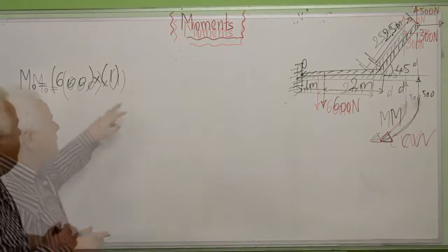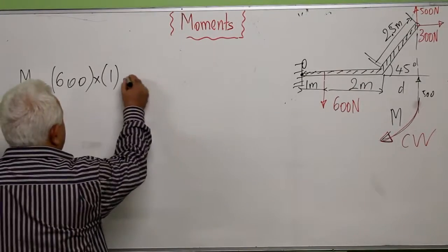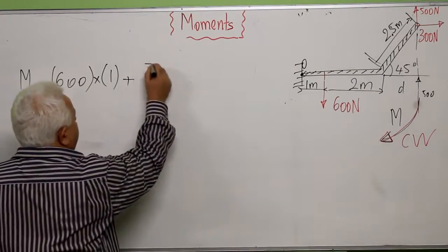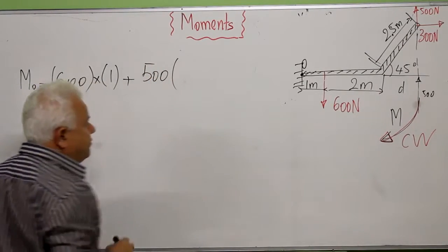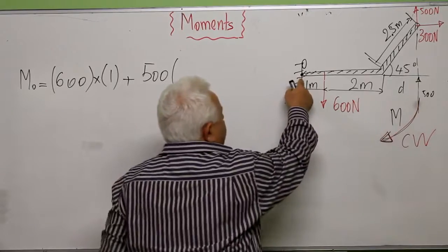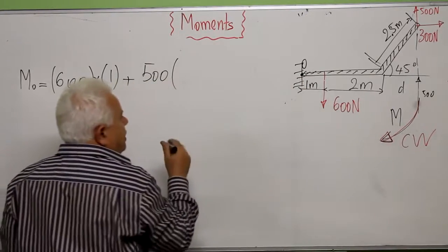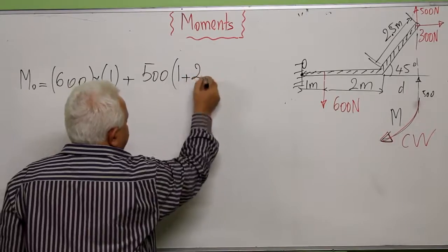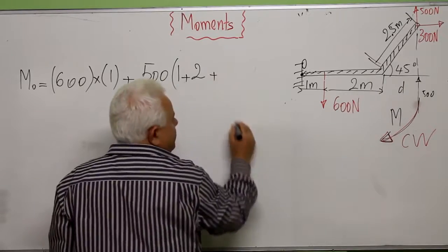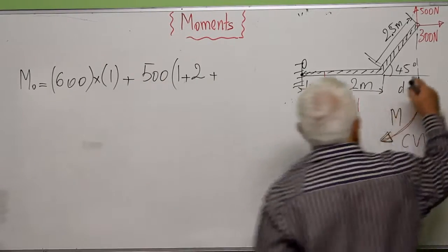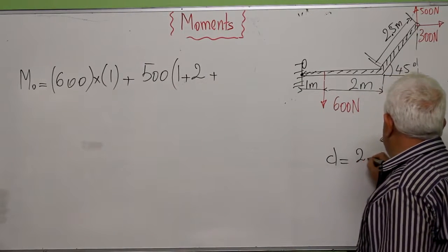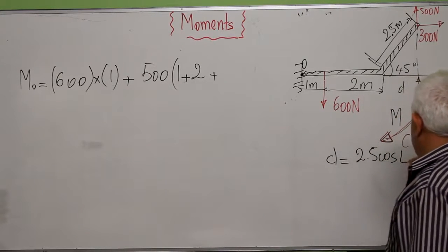So I have to take this into consideration for my calculation. Now we have to add the moment of this force — 500 newtons — which is force times distance, and the distance that separates the line of action to the point O is 1 meter plus 2 meters plus this distance D. And this distance D is 2.5 cosine 45 degrees.